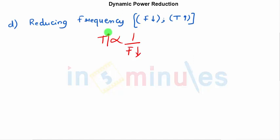In this clip we have understood the four parameters that contribute to switching power, which is the major part of dynamic power. Dynamic power is a combination of switching power and short circuit power, and we saw how to reduce it. Stay tuned for further clips, and thank you very much.